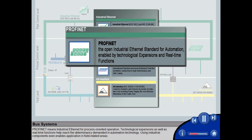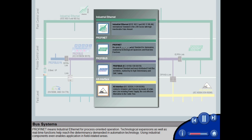Technological expansions, as well as real-time functions, help reach the determinancy demanded in automation technology. Using industrial components even enables application in field-related areas.